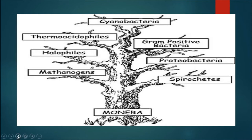In this slide we can see different types of bacteria in Monera: thermoacidophiles living in hot springs, halophiles in salty areas, methanogens in marshy areas, cyanobacteria which are photosynthetic, gram-positive bacteria having a special structural type which takes up certain stain, and also proteolytic and spirochete bacteria. These are the different classes of bacteria.